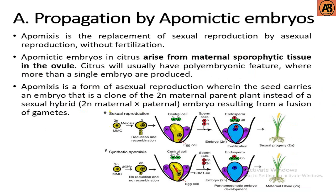Now we learn about apomyxis, an example of asexual propagation. Apomyxis is the replacement of sexual reproduction by asexual reproduction without fertilization. Apomyctic embryos in citrus arise from maternal sporophytic tissue in the ovule. Citrus will usually have a poly-embryonic feature where more than a single embryo are produced. Apomyxis is a form of asexual reproduction wherein the seed carries an embryo that is a clone of the diploid maternal parent plant.